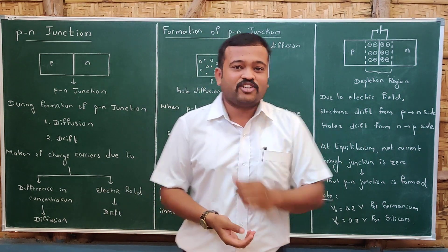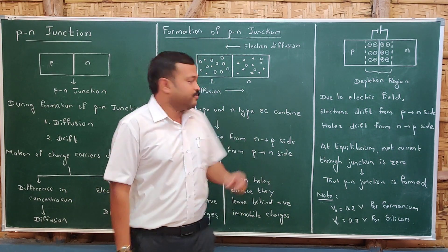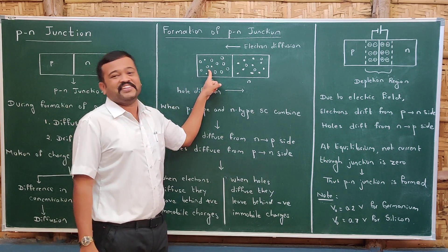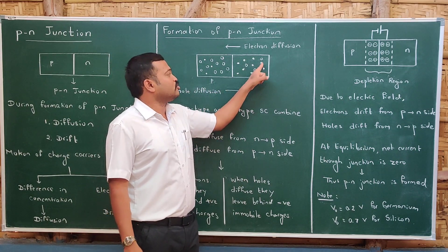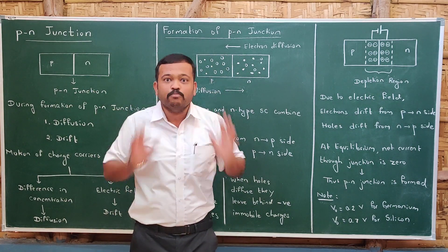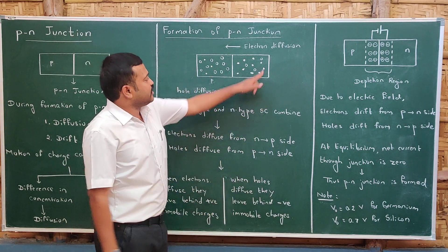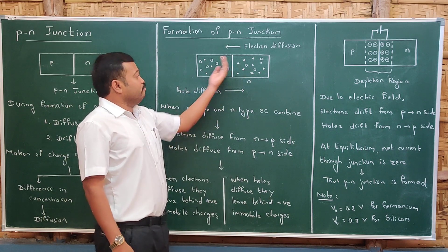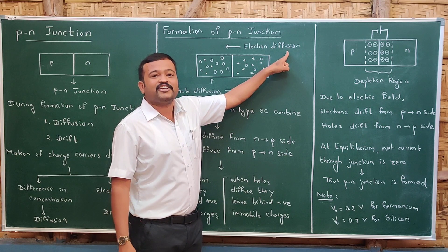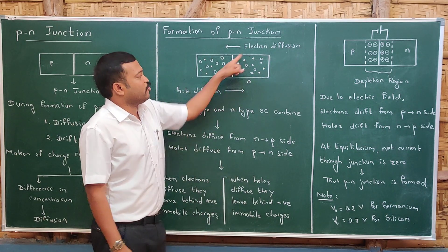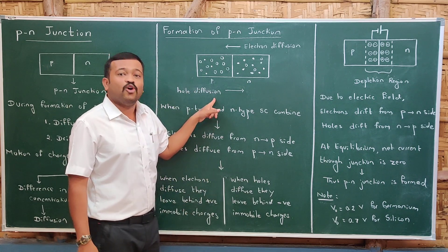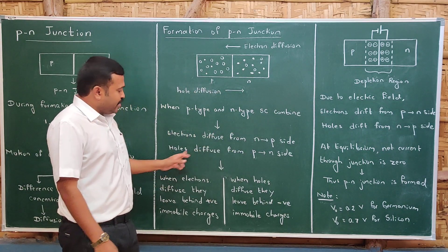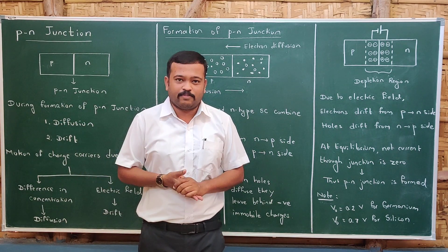Let us understand the formation of a PN junction. In a P-type semiconductor, holes are the majority charge carriers and electrons are the minority charge carriers. In N-type, electrons are the majority charge carriers and holes are the minority charge carriers. When these combine, electrons are more on the N side and less on the P side, so electrons begin to move from N side to P side — this is called electron diffusion. Holes are more on the P side and less on the N side, so holes move from P side to N side — this is called hole diffusion.